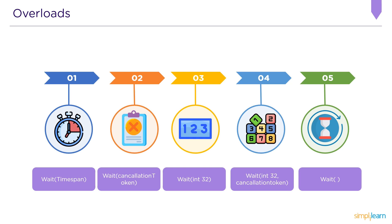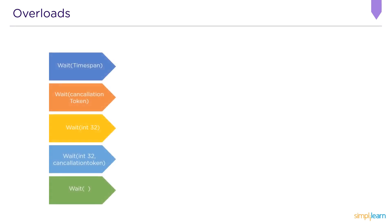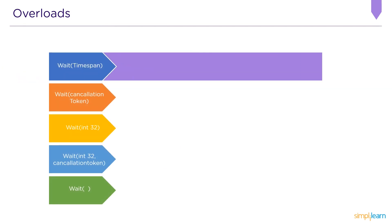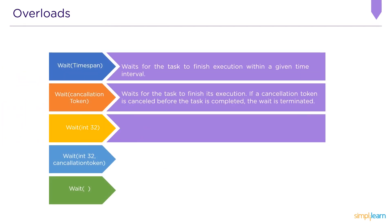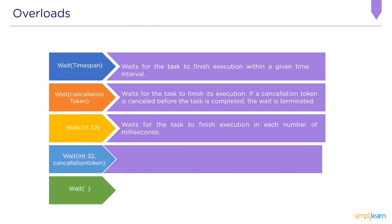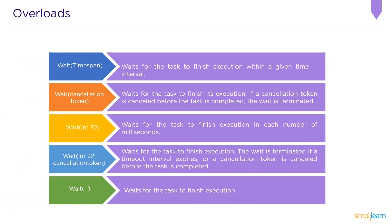Let's define all five C# Wait overloads. The first overload is Wait(TimeSpan), defined as waiting for the task to finish execution within a given time interval. The second overload is Wait(CancellationToken), defined as waiting for the task to finish its execution. If a cancellation token is cancelled before the task is completed, the wait is terminated.